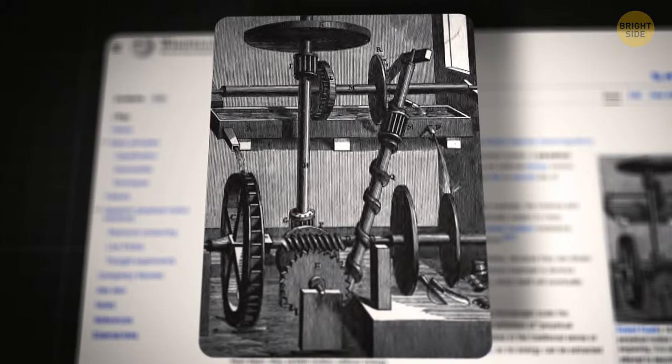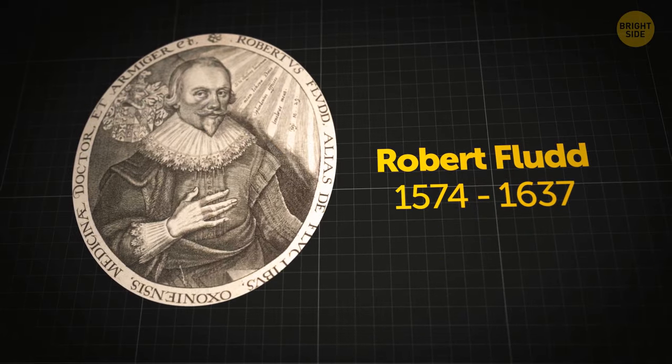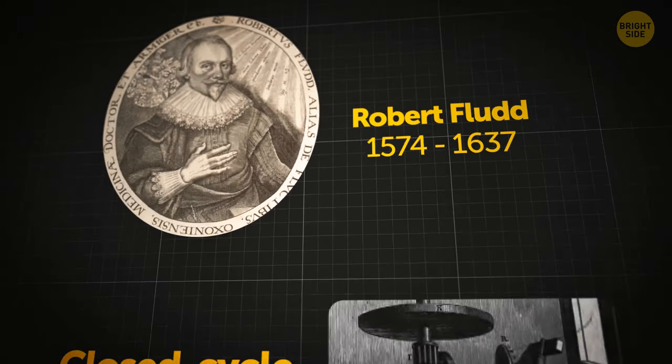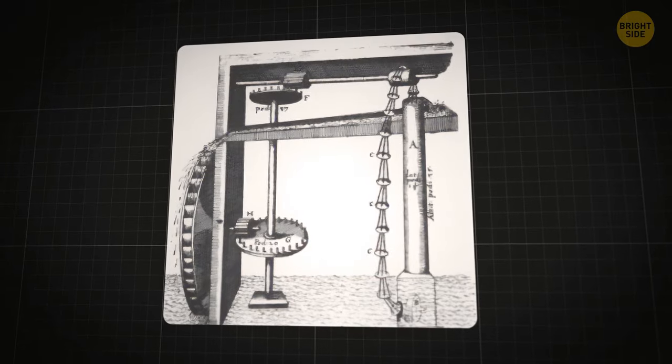That doesn't mean that during the course of history, people haven't tried to construct one. In 1618, an English physicist, Robert Flood, proposed something called a closed-cycle water mill. A mill that never stops working, if you like it better.